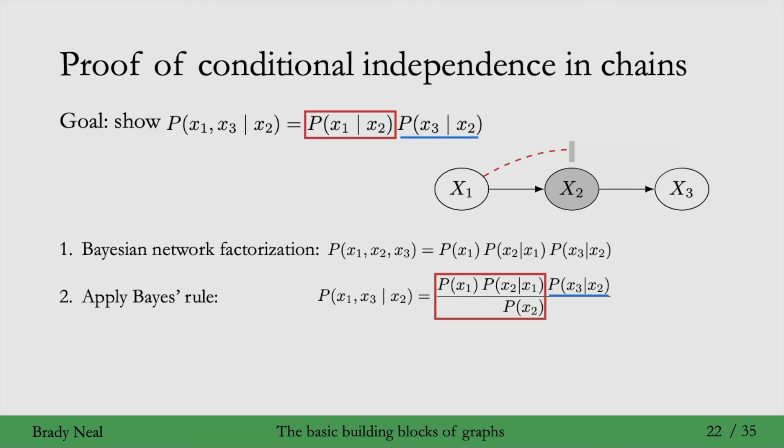So if we just notice that in the numerator, we can combine those into a joint, p of x1 comma x2, and then just apply Bayes' rule again. So we can turn this fraction into exactly what we want, p of x1 given x2.